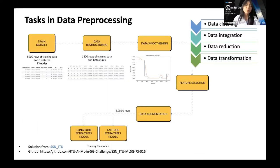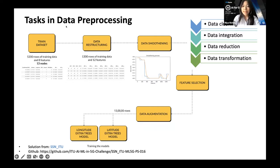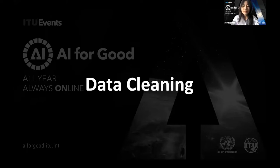Within data preprocessing, we have a number of steps depending on your situation. There are four main processes: data cleaning, data integration, data reduction, and data transformation. A second approach — from a previous problem statement solution by team SSN ITU, available on GitHub — involved data restructuring, data smoothing, feature selection, and data augmentation before implementing into their model. Today we're introducing three techniques: data cleaning, data transformation, and dimension reduction.